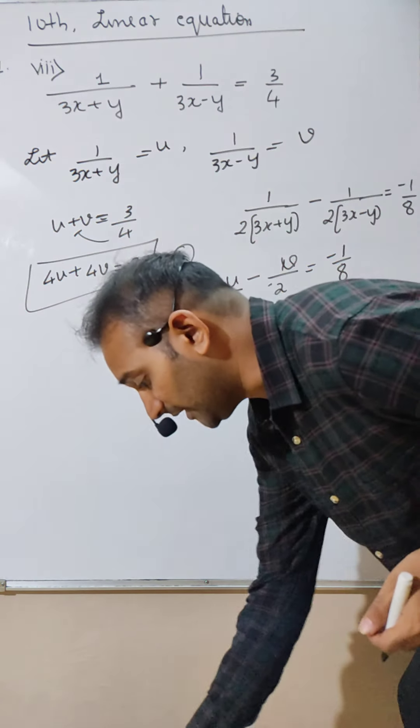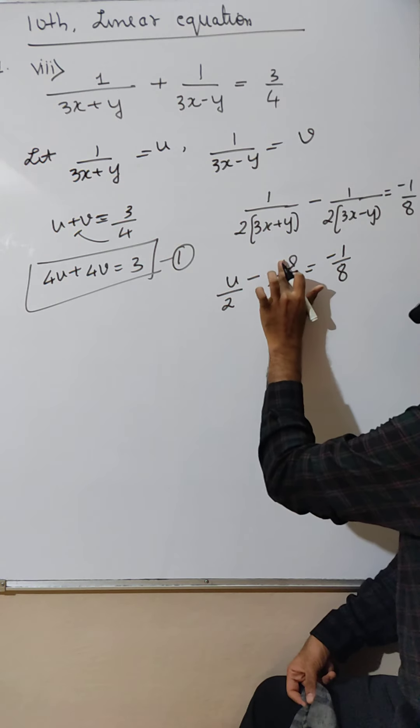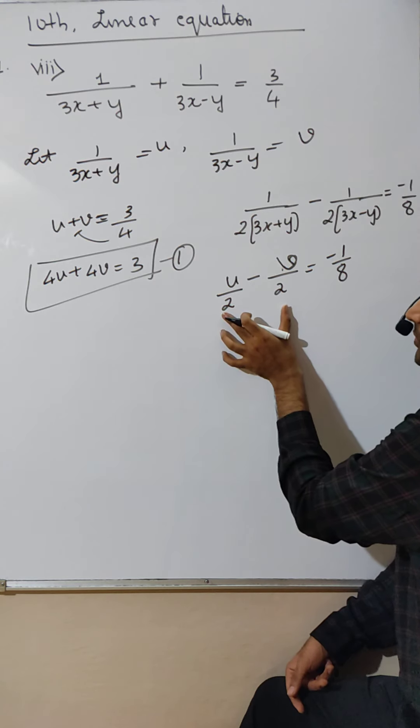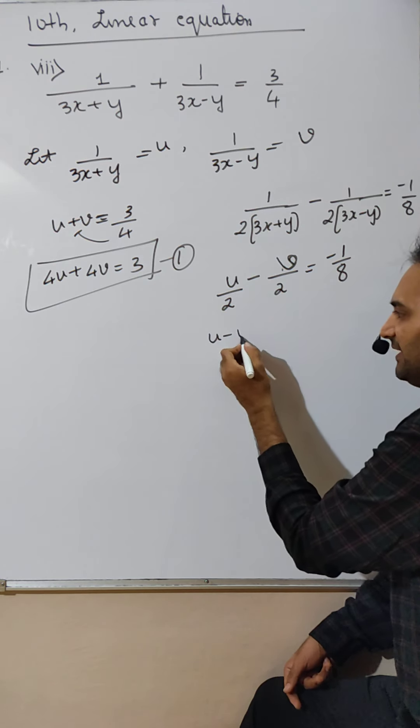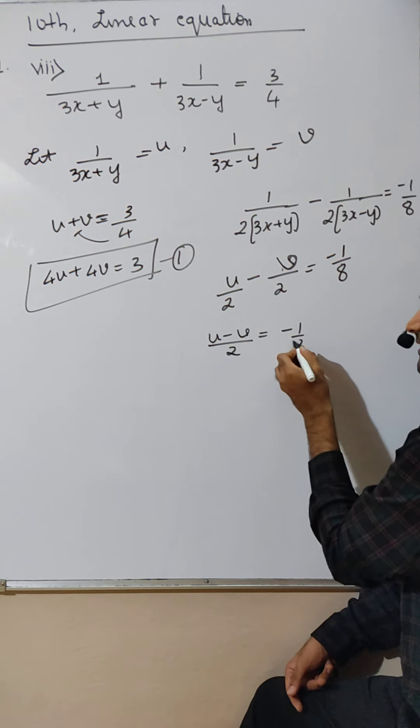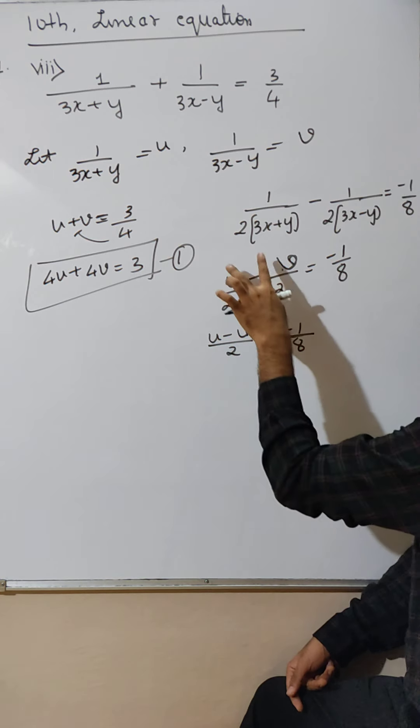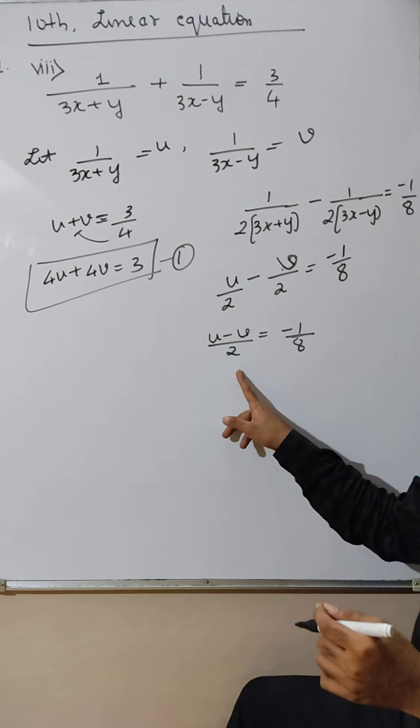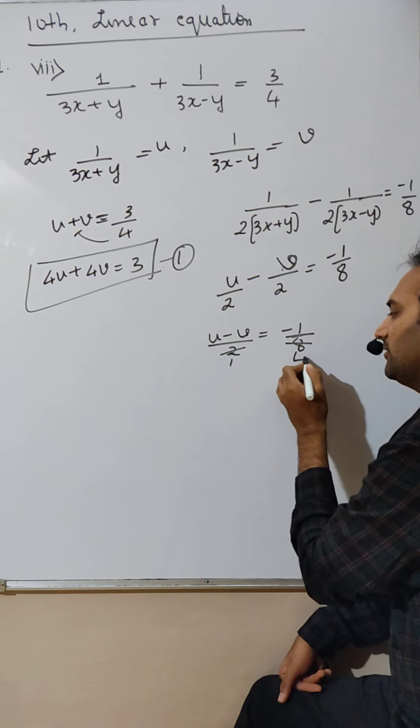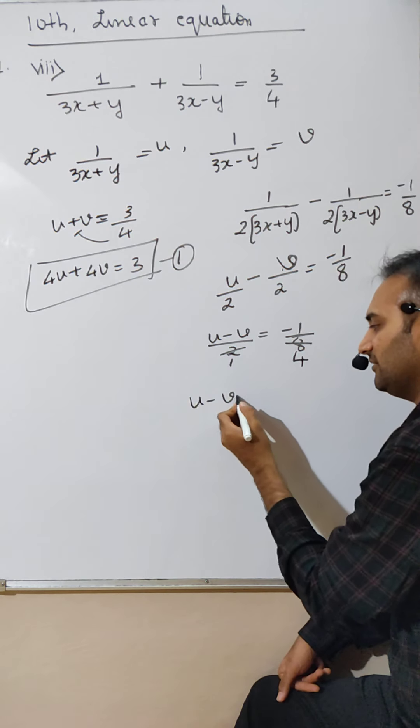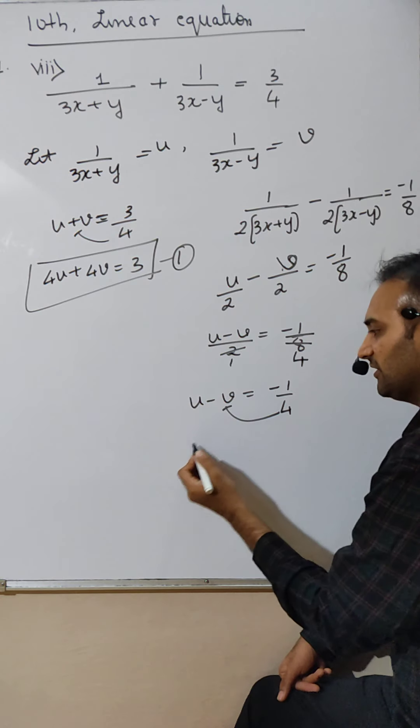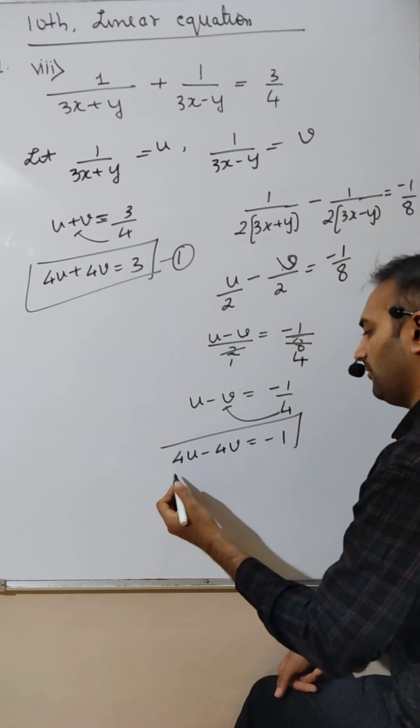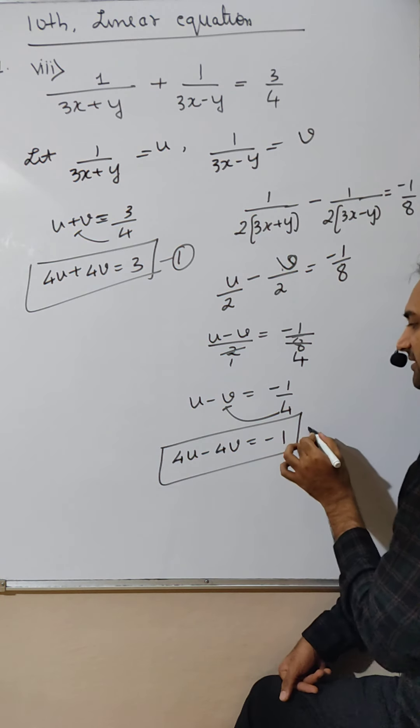Now you have to be smart. Take 2 together: u minus v over 2 is equal to minus 1 by 8. 2 times 4 is 8, so u minus v is minus 1 by 4. Cross multiply: 4u minus 4v is minus 1. That's equation number 2.